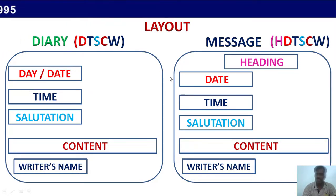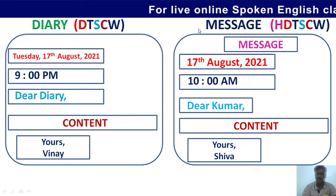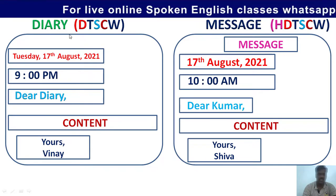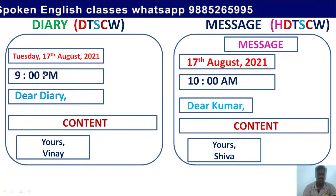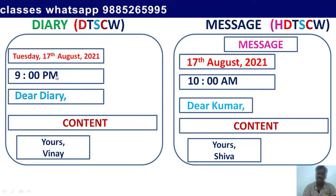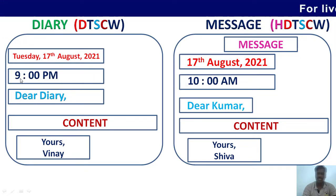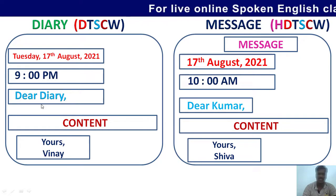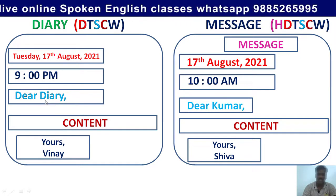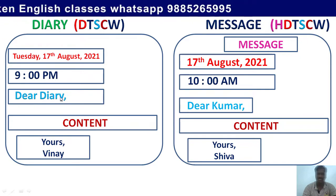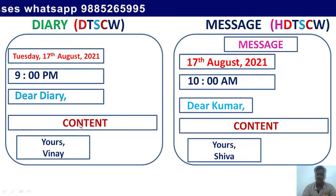Let us see the differences with a model diary and message. In the diary we have day — so Tuesday — and date: 17th August 2021, and the time: 9 p.m. Remember, the diary should always be written at night before you go to bed, so you can mention 9 p.m. The salutation is 'Dear Diary' — always the same for diary entry. Spell 'diary' correctly with a capital D, and end the salutation line with a comma.